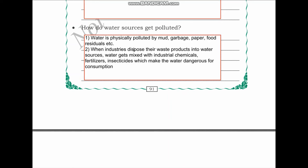Water sources get polluted in different ways. Water is physically polluted by mud, garbage, paper, food residuals, and similar waste thrown into water sources. Another way water gets polluted is when industries dispose their waste products into water sources. Water then gets mixed with industrial chemicals, fertilizers, and insecticides, which makes it dangerous for consumption.